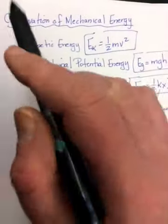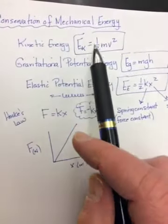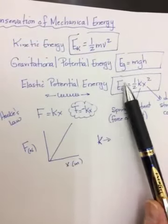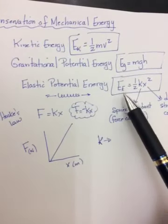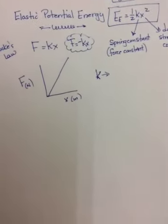So these are the three types of mechanical energy. So going back to our title, Conservation of Mechanical Energy. What it's saying is that the total initial energy of a system before an event must be equal to the total, or should be equal to the total final.